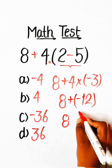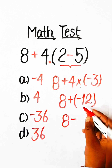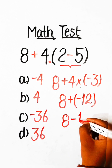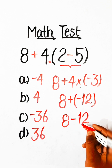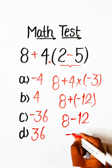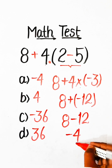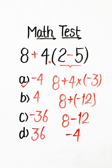8 plus minus 12 — 8 minus 12 is minus 4. So option A, minus 4, will be the correct answer.